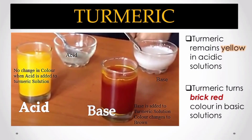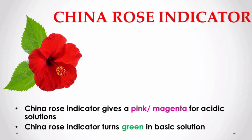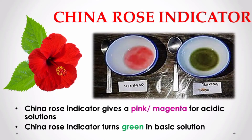The next indicator is turmeric. You might have seen that a spot of turmeric or gravy on cloth becomes red when soap is applied on it. This is because turmeric acts as an indicator of base — soap is basic. Turmeric turns brick red in basic solution but remains yellow in acidic solution.